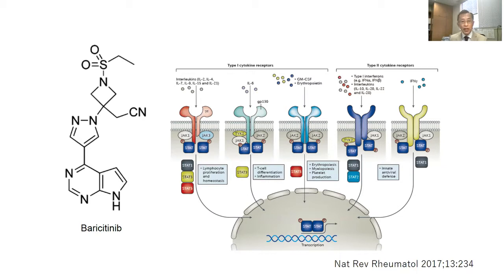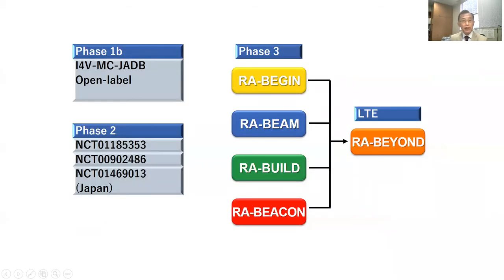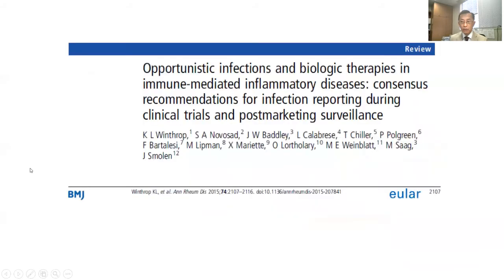Our objective of this study was to evaluate the incidence of infection in patients with active RA treated with baricitinib. Infections were summarized from an integrated database of nine clinical trials. We used previously published opportunistic infection consensus case definitions as shown in this slide.